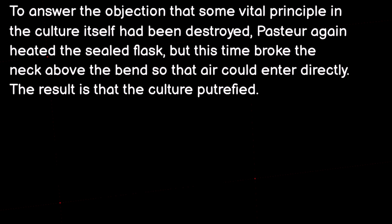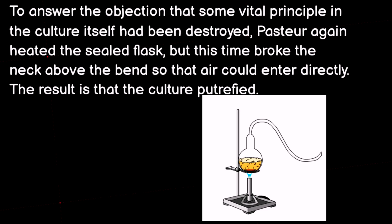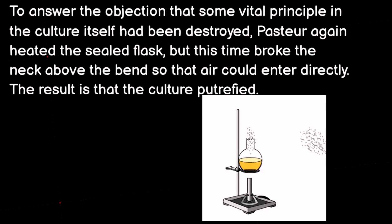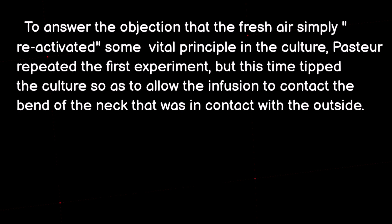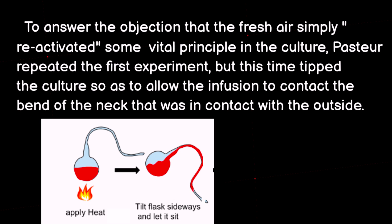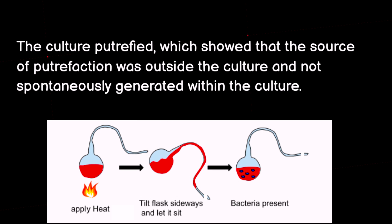To answer the objection that some vital principle in the culture itself had been destroyed, Pasteur again heated the sealed flask, but this time broke the neck above the bend so that air could enter directly — the result was that the culture putrefied. To answer the objection that the fresh air simply reactivated some vital principle in the culture, Pasteur repeated the first experiment, but this time tipped the culture so as to allow the infusion to contact the bend of the neck in contact with the outside. The culture putrefied, which showed that the source of putrefaction was outside the culture and not spontaneously generated within it.